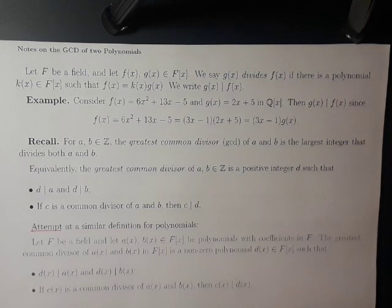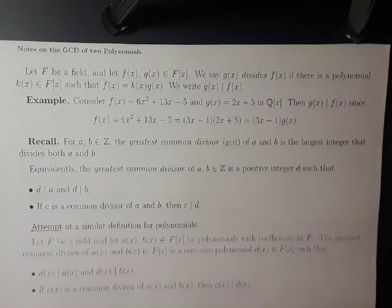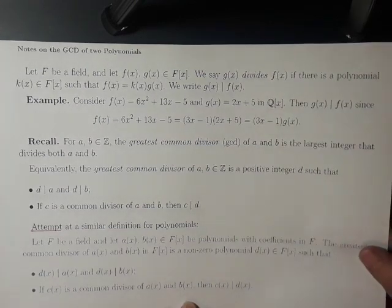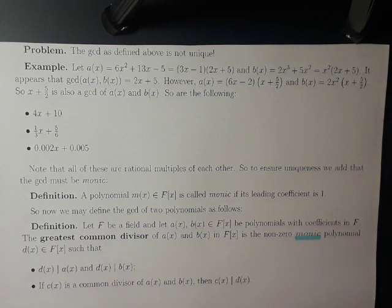We could attempt a similar definition for polynomials, and we'll actually see that there's a problem with this definition and we're going to have to modify it. We could try to define the GCD of two polynomials exactly as we do for integers: let f be a field and let a and b be polynomials with coefficients in f. The greatest common divisor of a and b should be a non-zero polynomial d with coefficients in f such that d divides a and d divides b, and if c is any common divisor of a and b, then c divides d. The problem here is that the GCD as defined like this is not unique.